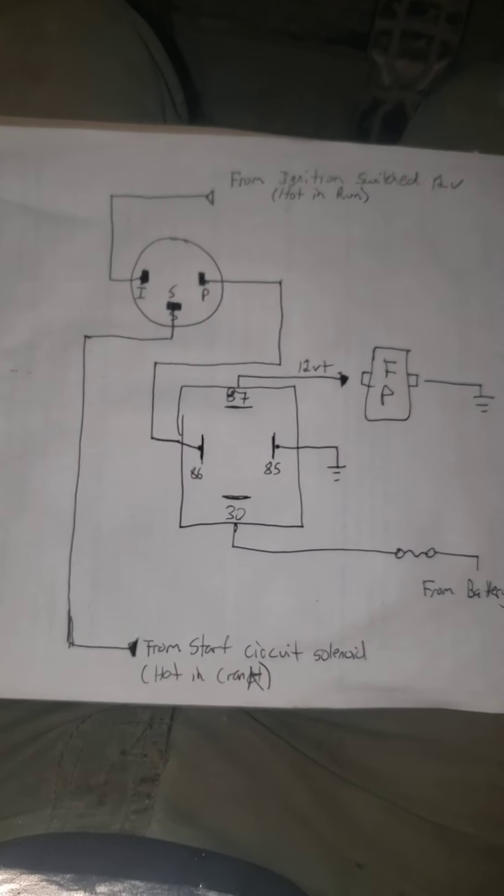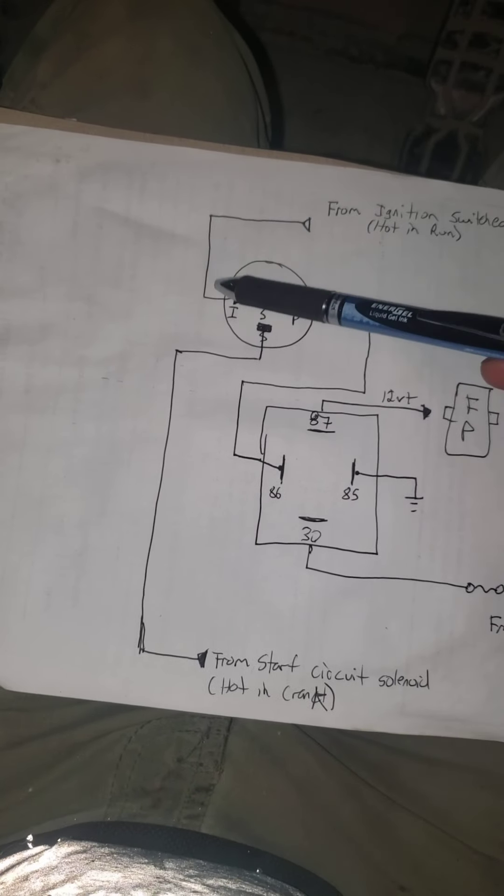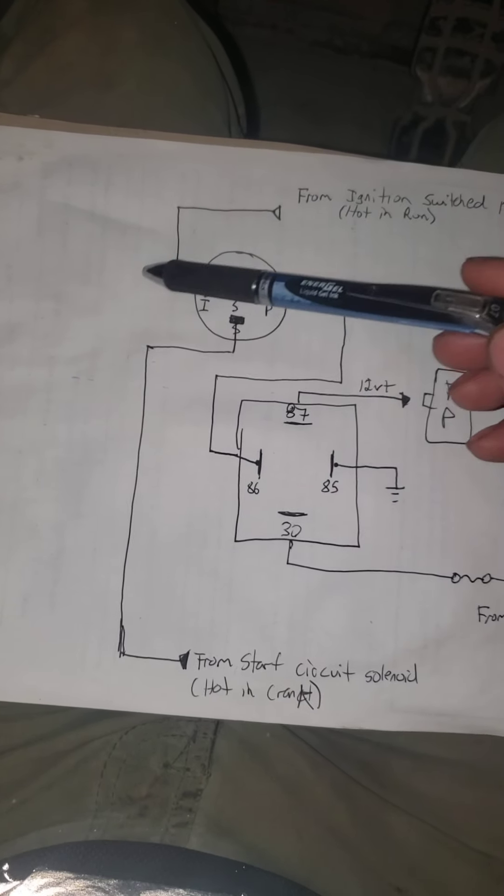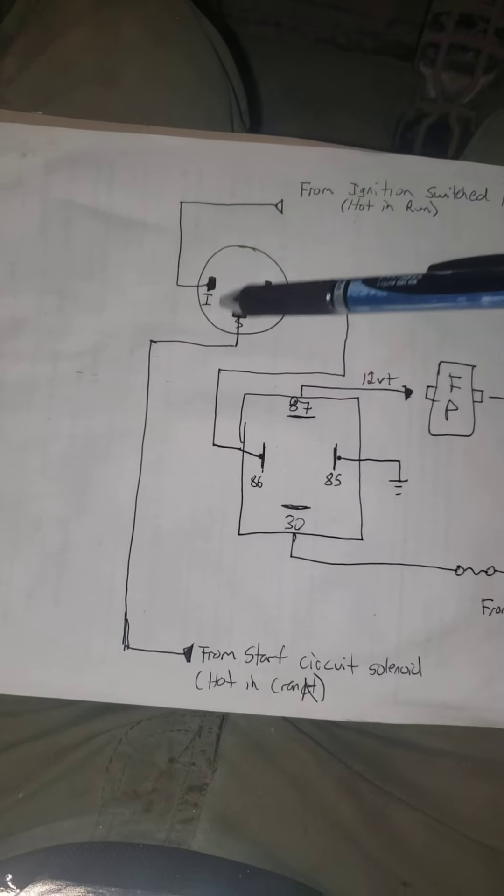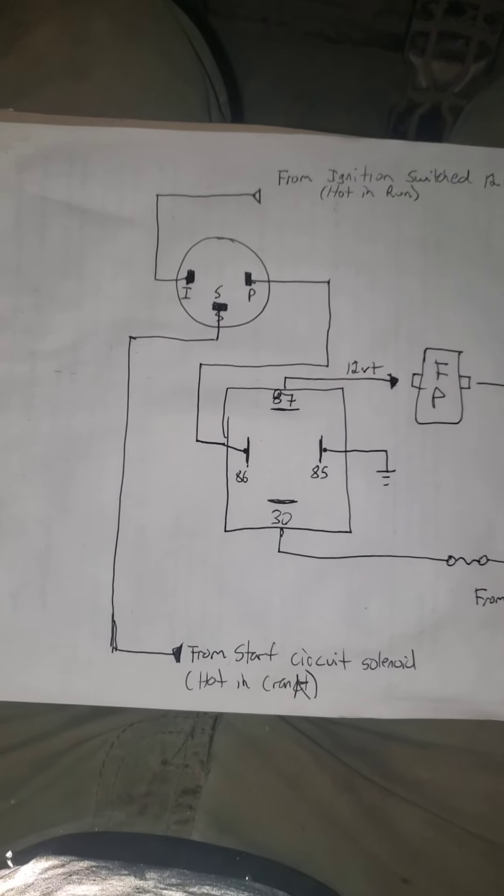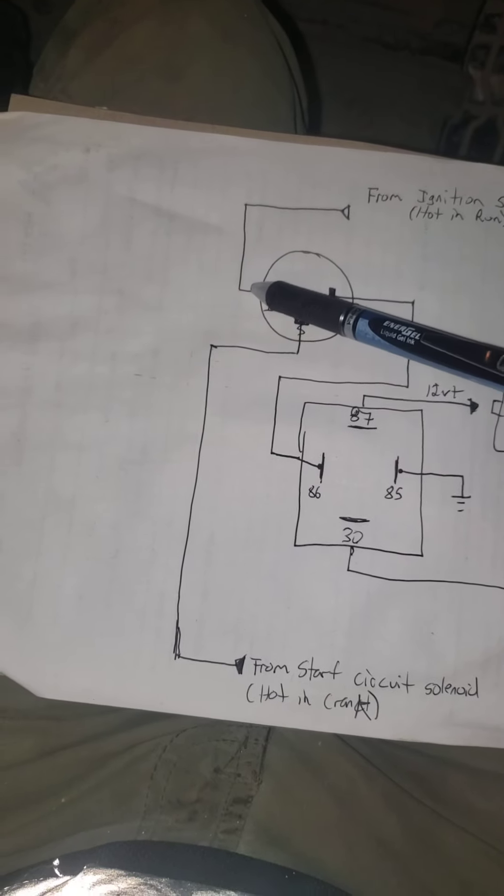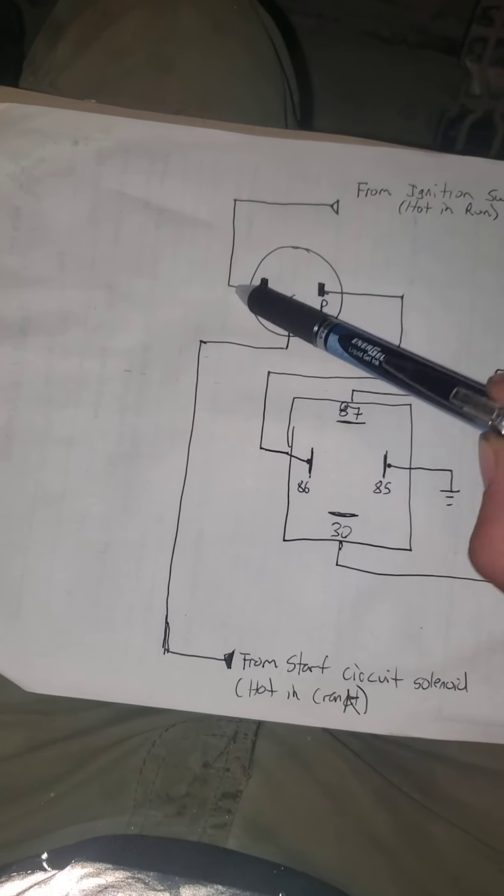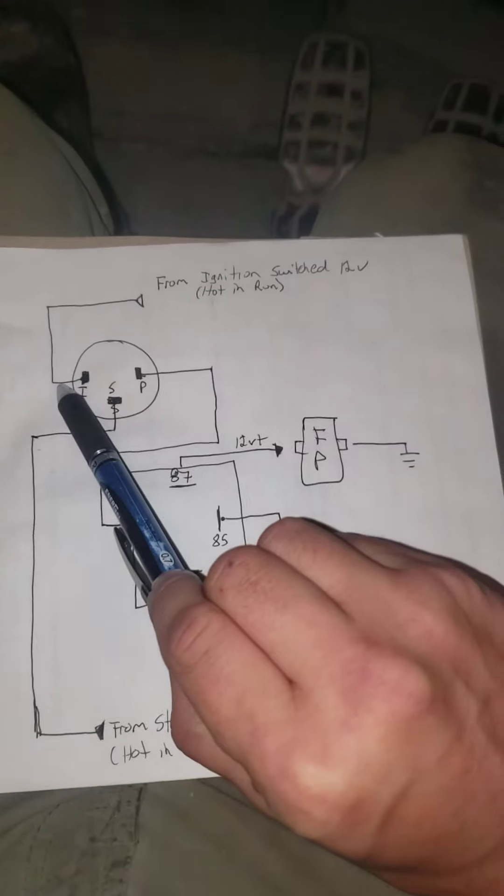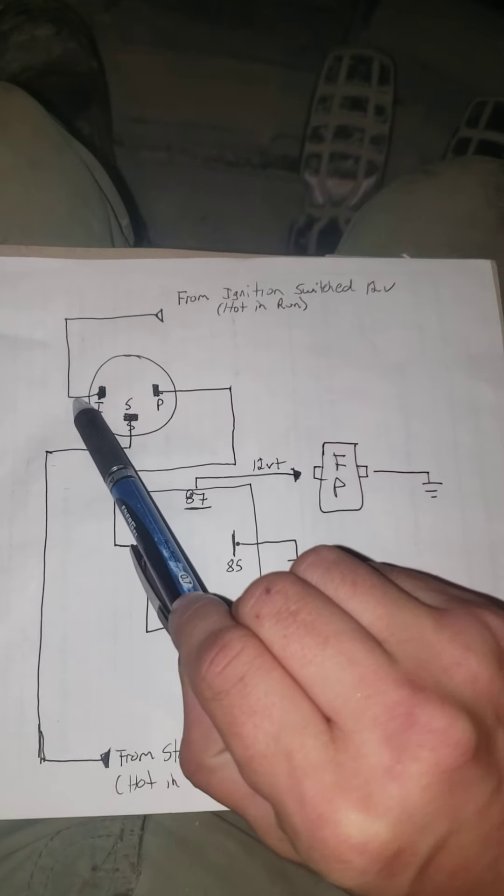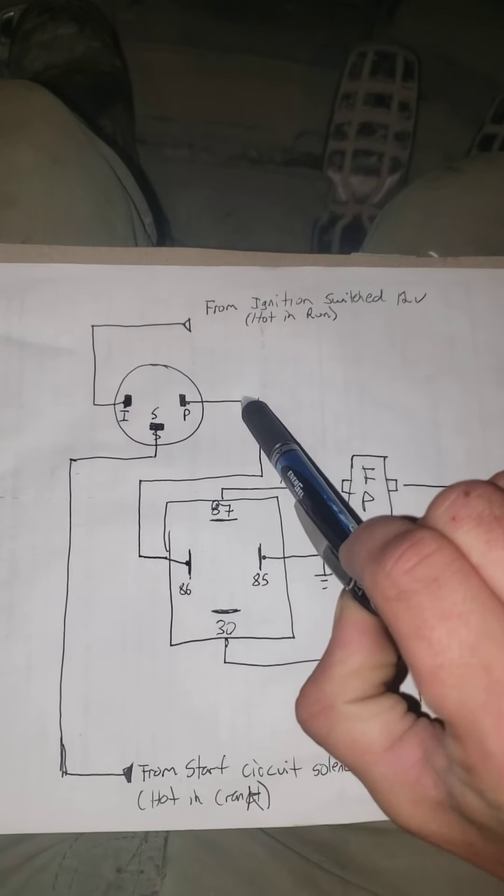There is another way to do this. A lot of older style engines or what people used to do back in the day, they would just take a momentary helm switch, any kind of switch that automatically returns to normally open. It's only normally closed when you push it. They would take a switch and jump it from this wire here, coming from your ignition switch, and they would jump it around the switch to your P.